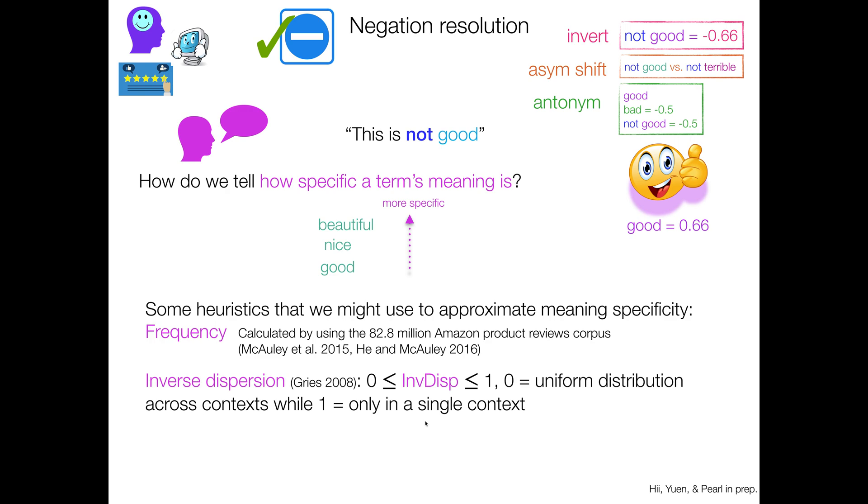And the variety of contexts we can actually approximate with the heuristic of inverse dispersion, which ranges between 0 and 1. And 0 means you have a uniform distribution across contexts, while 1 means you pretty much only appear in a single context. Like very not uniform. And this is actually calculated by summing the difference of the observed relative frequency of a particular term versus the expected relative frequency if there were a uniform distribution across contexts. And you divide by 2, so you get a nice range between 0 and 1.